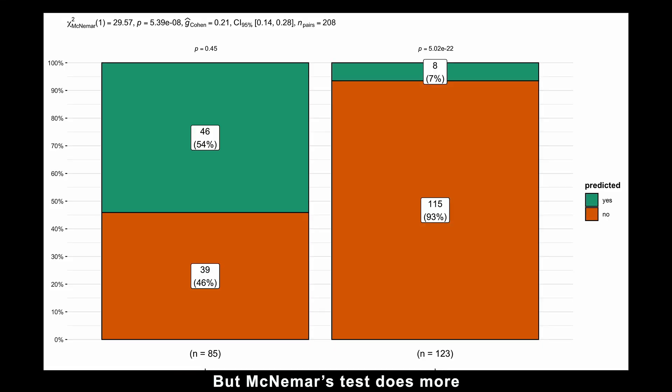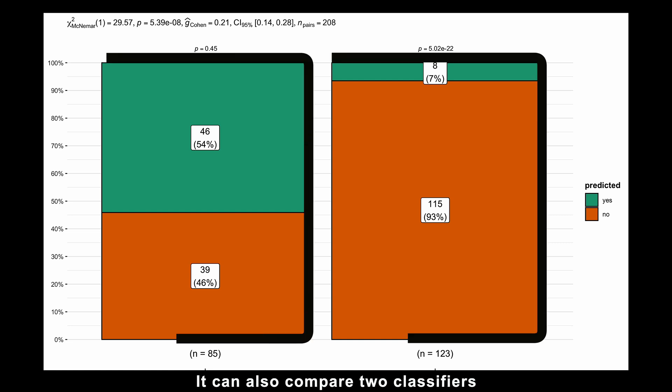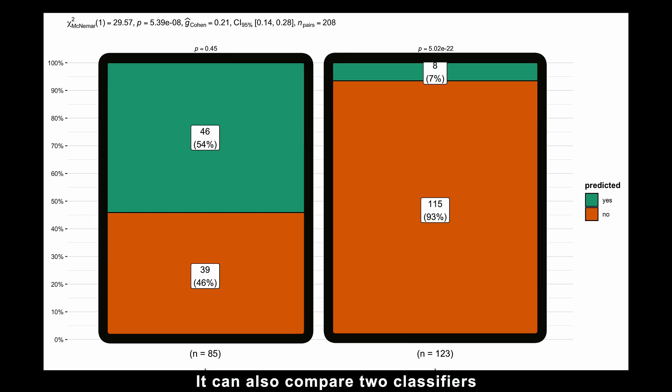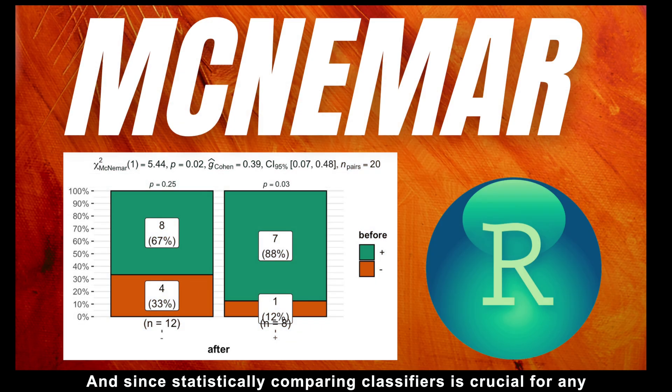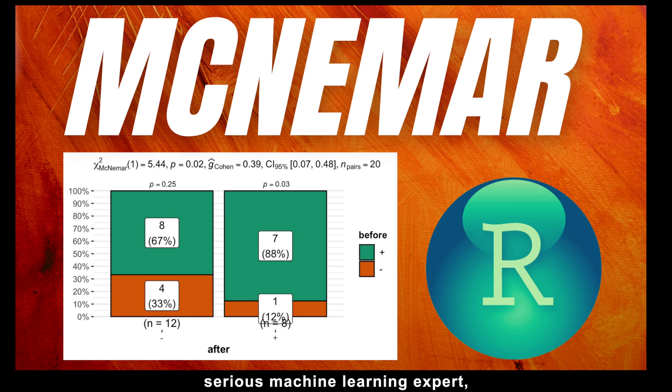But McNemar's test does more than just compare actual values to predicted ones. It can also compare two classifiers if you need to know which one is better. And since statistically comparing classifiers is crucial for any serious machine learning expert, you absolutely need to dive into McNemar's test next.